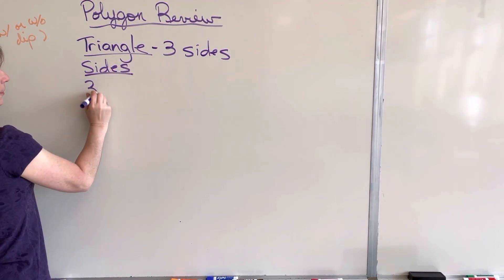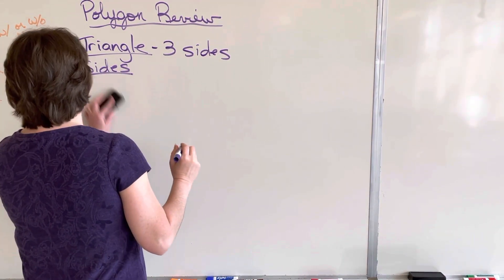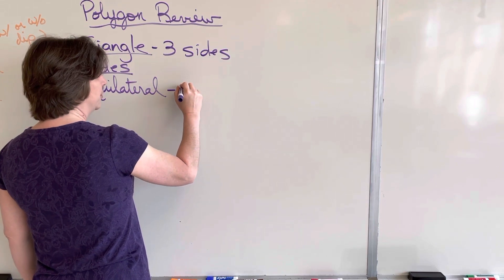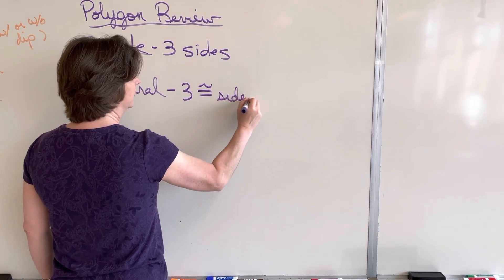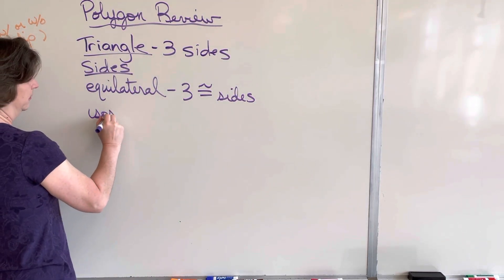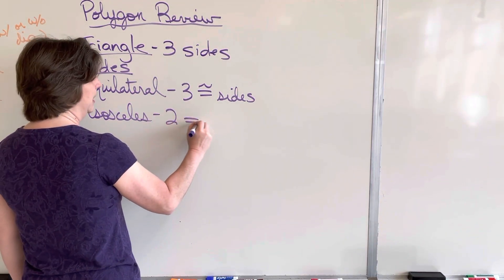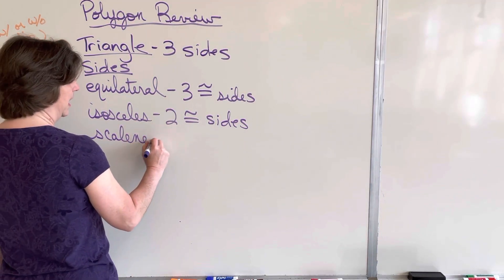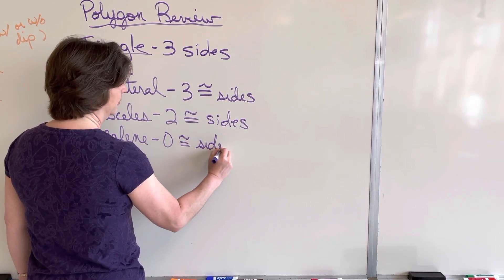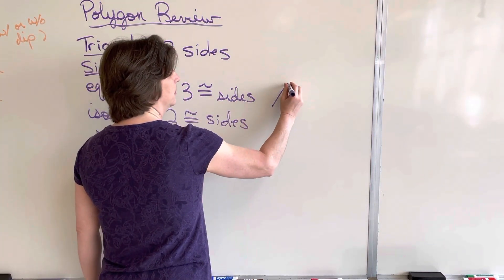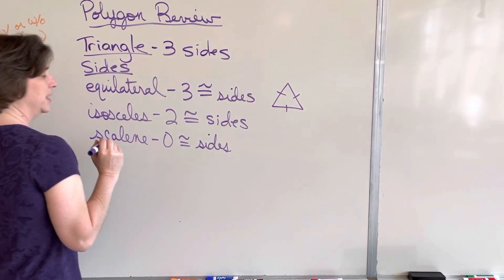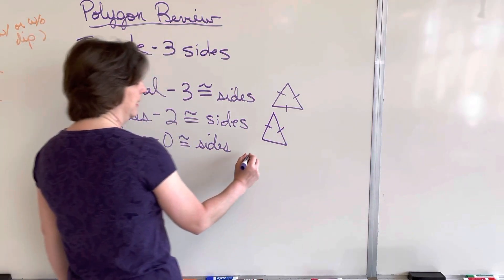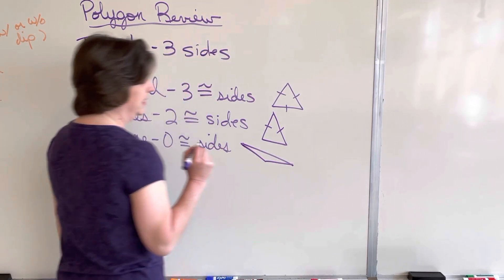Starting with sides, three equal sides is called an equilateral triangle — it has three equal or congruent sides. Our next one is the isosceles triangle, which has two equal or congruent sides. And our last one is the scalene triangle, which has zero congruent sides. So an equilateral triangle has three equal sides, an isosceles triangle has two equal sides, and a scalene triangle won't have any sides that are the same.